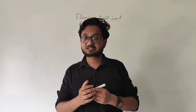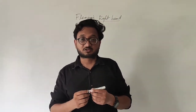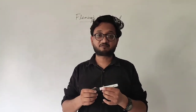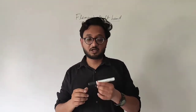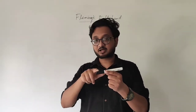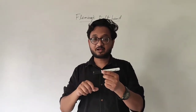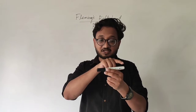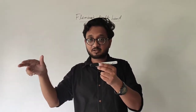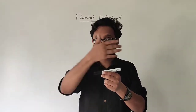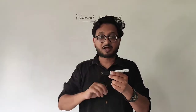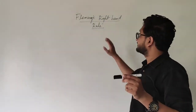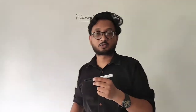So, Fleming's right hand rule helps us in finding the direction of that current. Suppose this is the conductor and we need to find the direction of the current — that is, either the current will move from this direction or it will move in the opposite direction. That is what you are supposed to find with the help of Fleming's right hand rule.